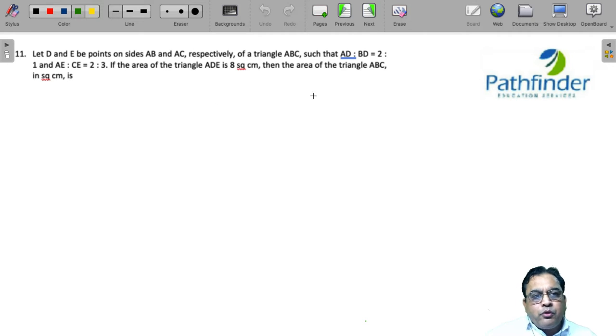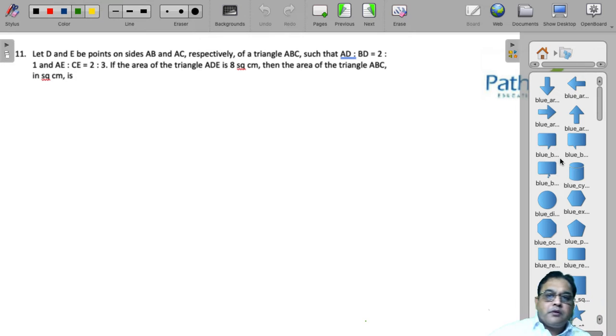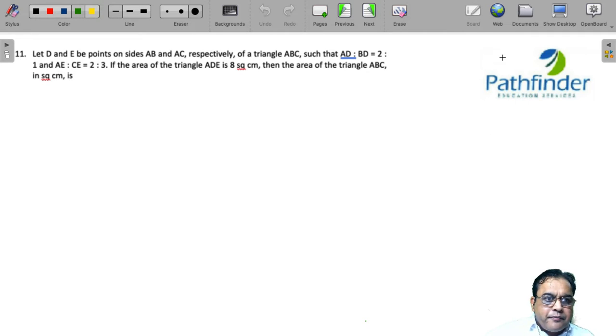CAT 2021 Slot 2, Question Number 11. Let's solve this question. Let D and E be points on the triangle ABC on the sides AB and AC respectively of a triangle.